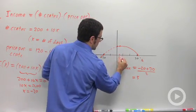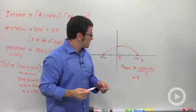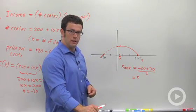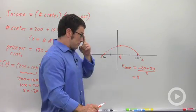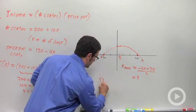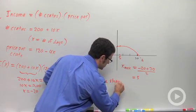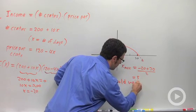That's it. The problem asked us to find the number of days she should wait to maximize income. The answer is 5. She should wait 5 days.